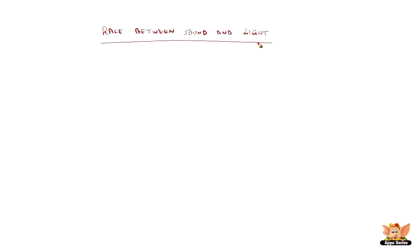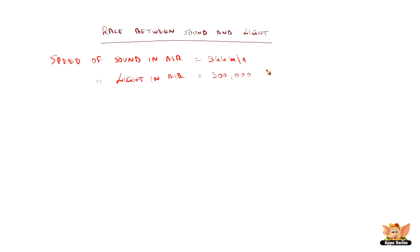Race between sound and light. We know the speed of sound in air and we know the speed of light in air. The speed of light in air is much greater than the speed of sound in air. The speed of sound in air is 344 meters per second at room temperature, whereas the speed of light in air is 3 × 10⁸ meters per second. We can see from this that the speed of light in air is much higher.